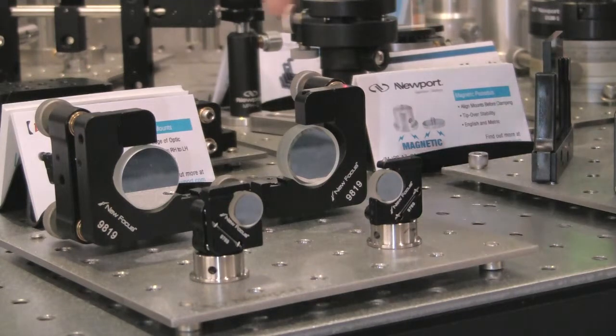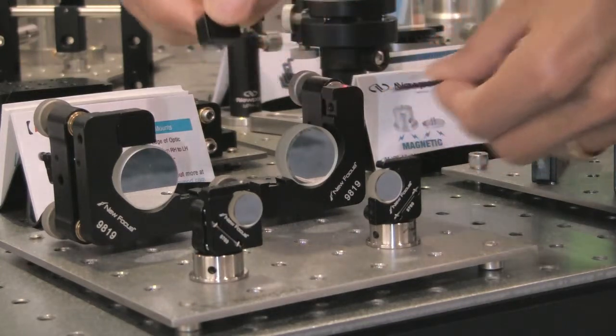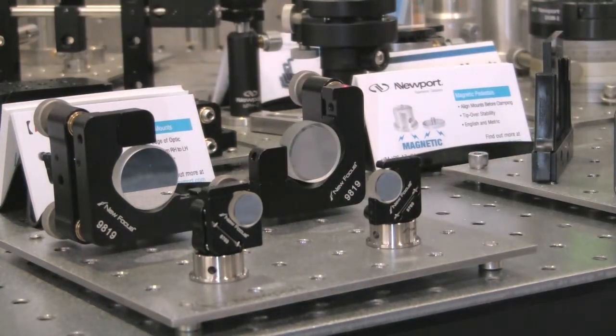This mount is unique because it's convertible. You can take the top piece here, remove it, and install it here to change it from a left-handed mount to a right-handed mount.